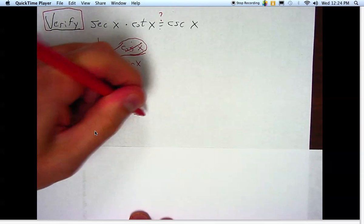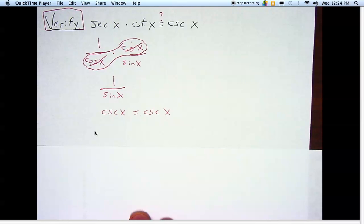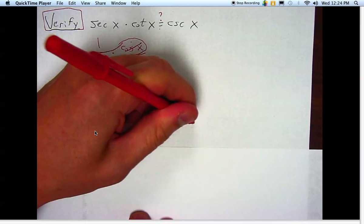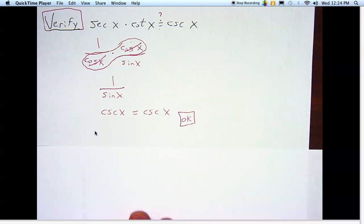And so sure enough, I have proven that the left-hand side is equal to cosecant of x, which is what the right-hand side was. So I'm okay. So I just put a little note to indicate that I'm done.